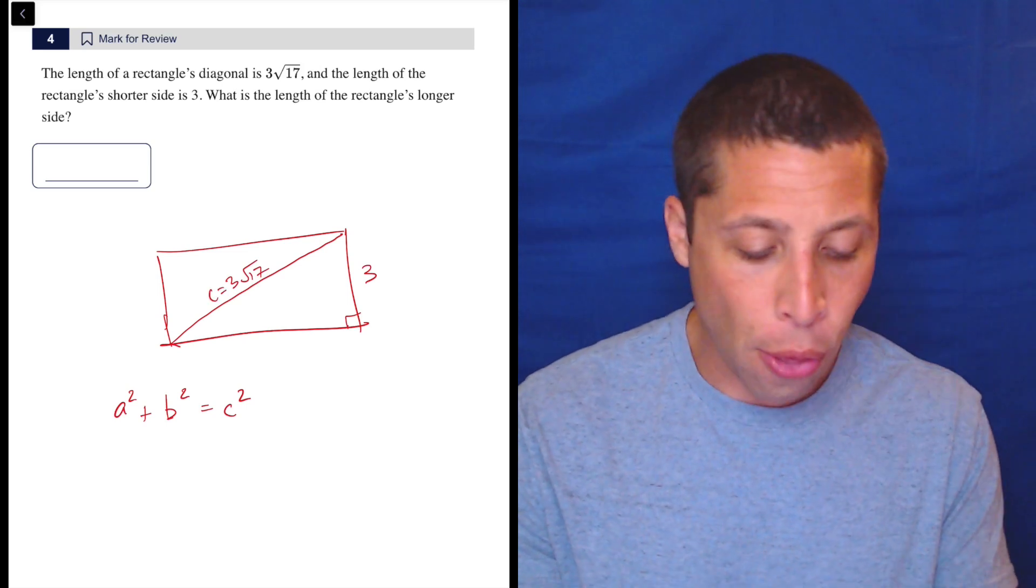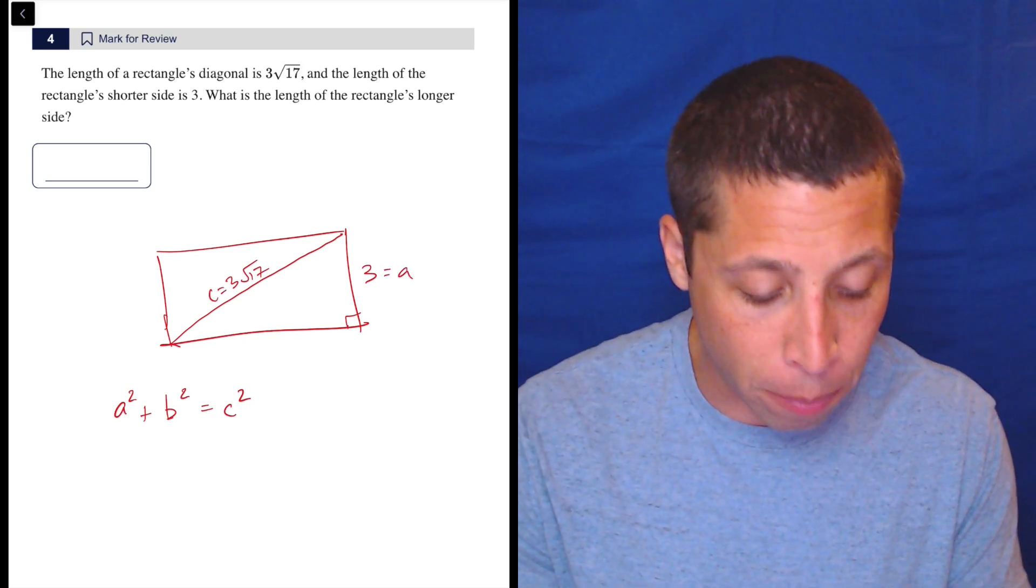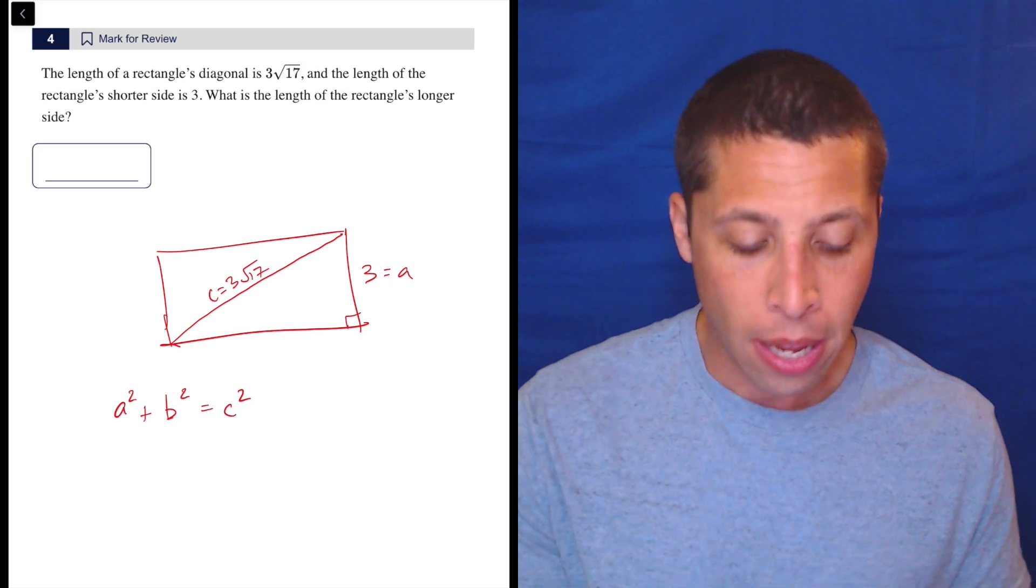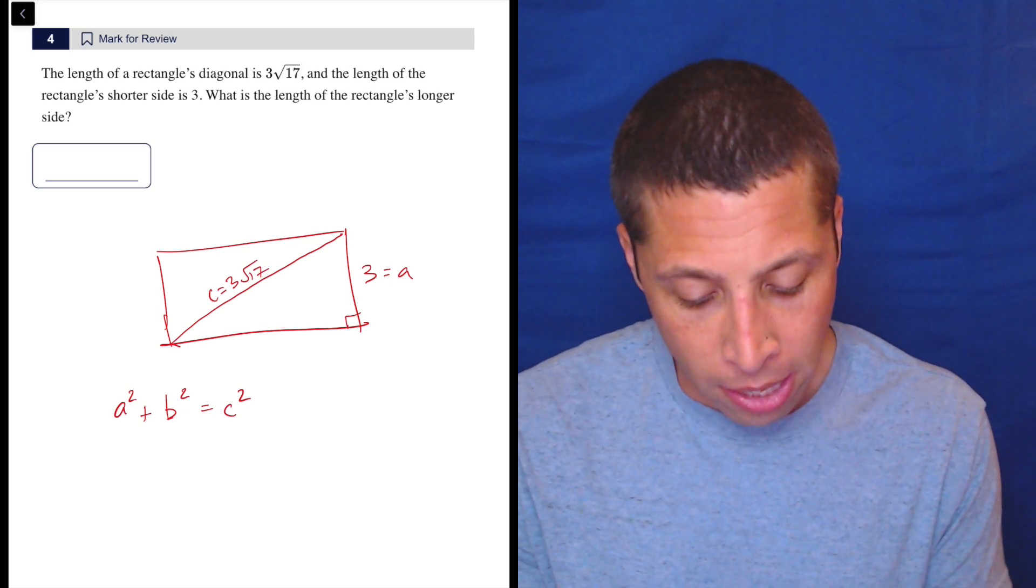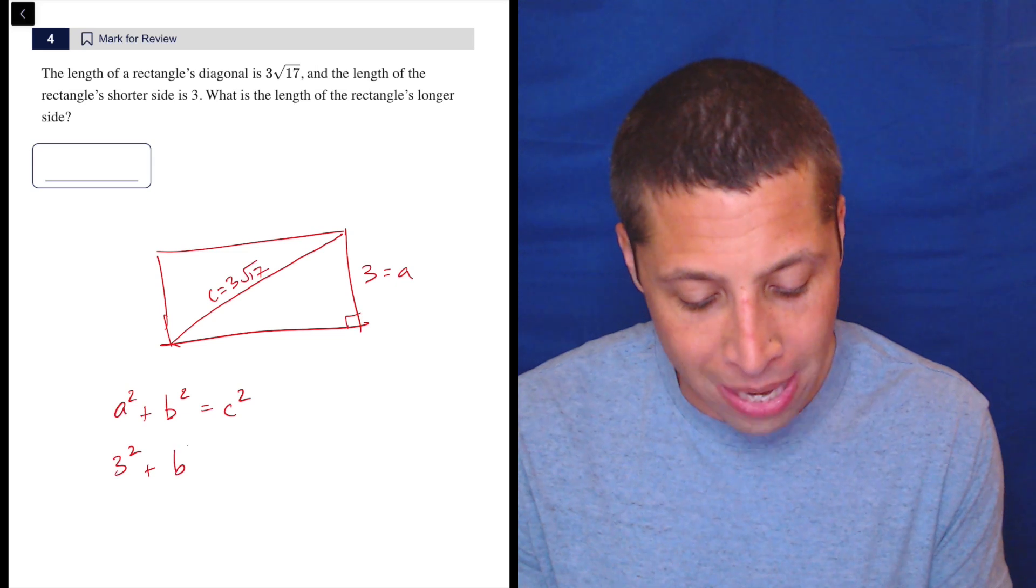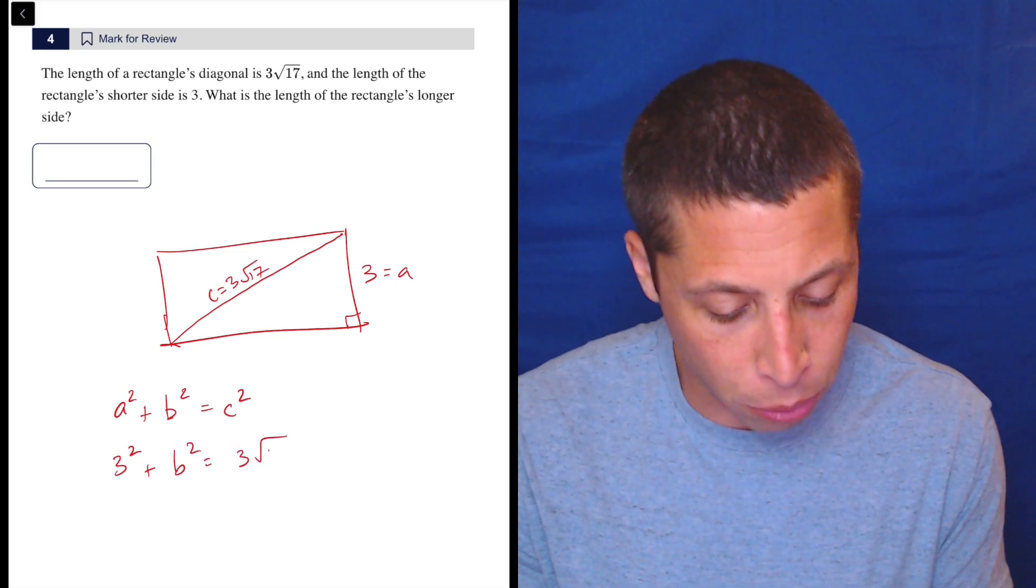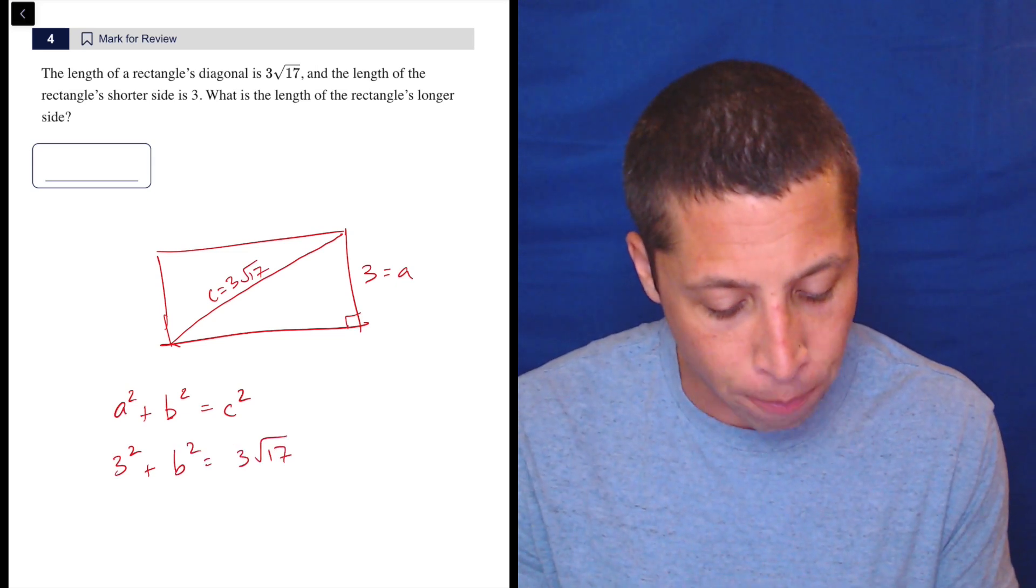That's the c. The 3 doesn't matter—we can make that the a or the b because the legs are kind of interchangeable. But you've got to make sure you put the 3√17 in the right place. So this is 3² + b² = (3√17)².